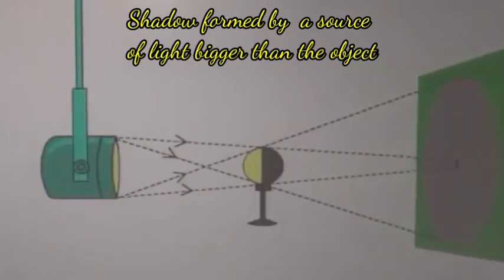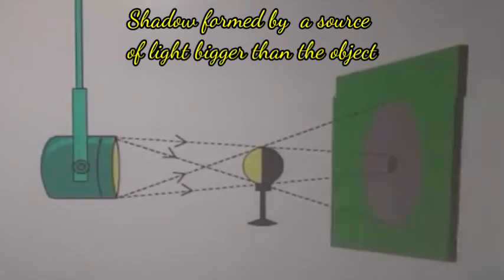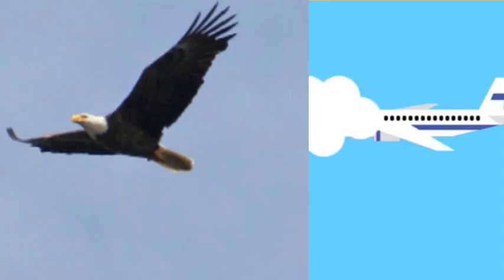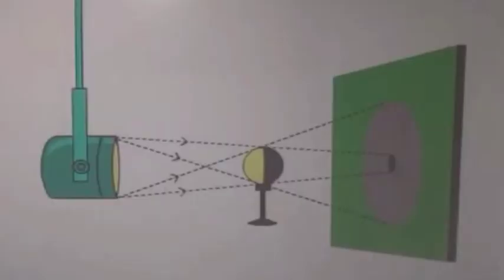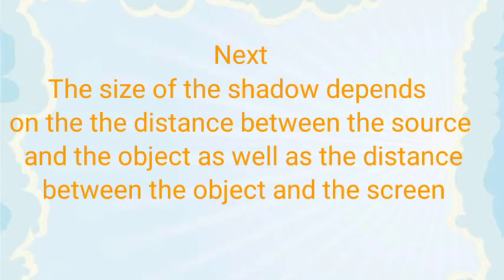This is the reason why shadows of birds and aeroplanes flying in the sky are not formed on the ground. The umbra region is too small to reach the ground, and the penumbra is too large and faint.